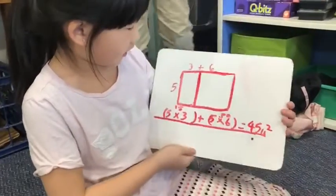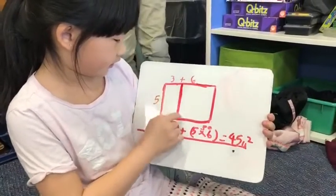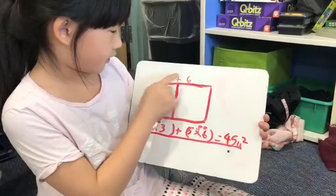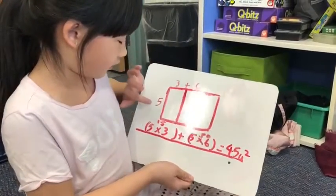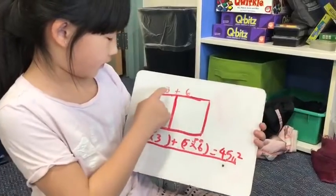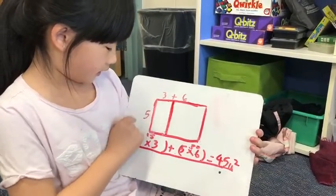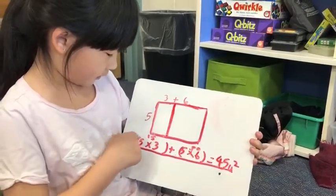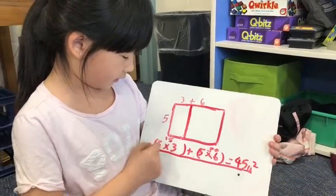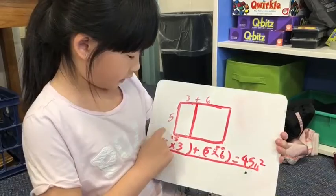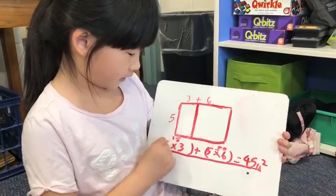First you had to split these two up. I did three plus six, and then there's a five down here. Now you have to put three times five. You put parentheses first, and then you put them in with the times.